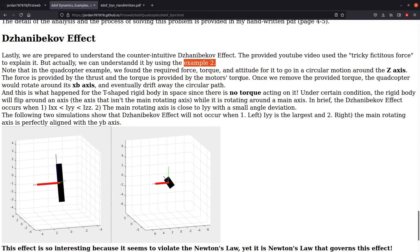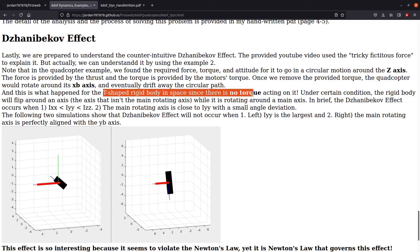In space, the T-shaped body doesn't generate any torque, so there is no external torque acting on it. And this is what occurs for the flip phenomenon while it is spinning.